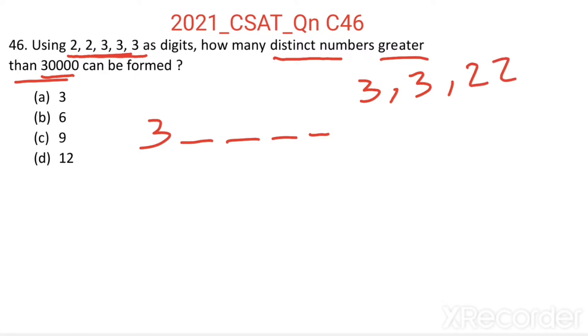These 4 digits we can arrange in these 4 places in 4 factorial ways. But to avoid repetition and to get distinct numbers greater than 30000, we have to divide by 2 factorial for these two 3s and again by 2 factorial for these two 2s.